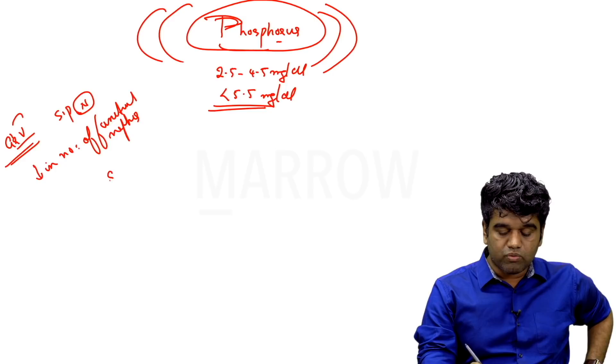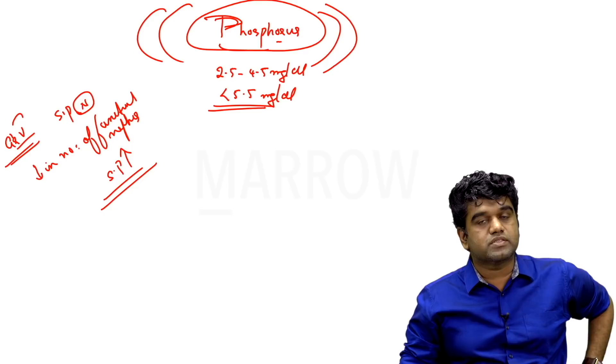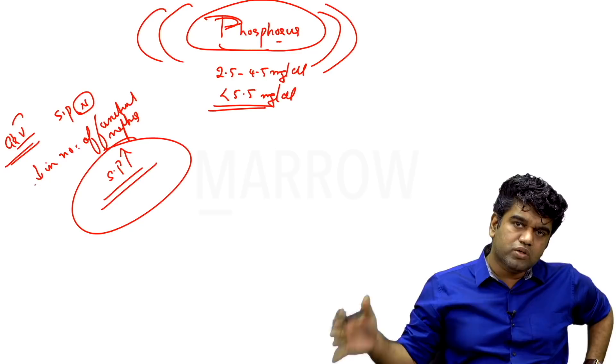It is only when your phosphorus starts to increase due to a decrease in nephron number. In early stages of CKD, you are basically not expecting to see hyperphosphatemia.